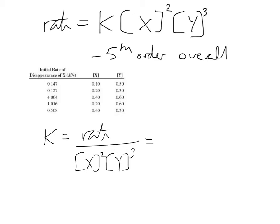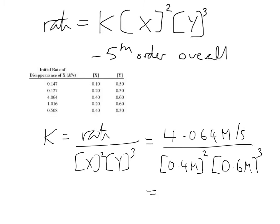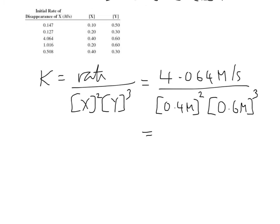Here's our rate table, and we're just going to substitute in and solve for K. We can rearrange and say K is equal to the rate divided by X squared Y cubed. We can pick any one. Let's go ahead and pick the third one. The rate is 4.064 molarity per second, and then the concentration of X is 0.4 squared, times by the concentration of Y, 0.6 molar cubed.